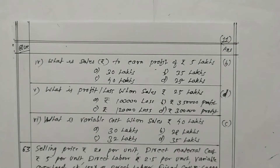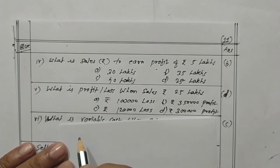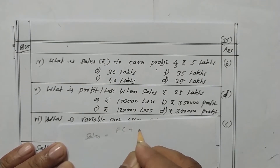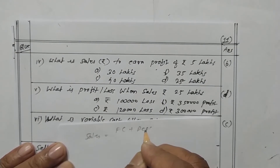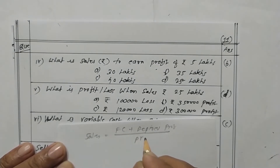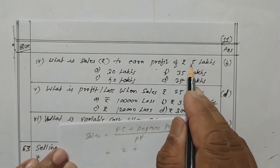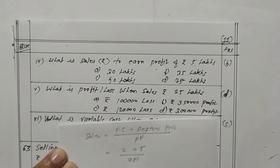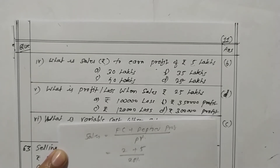What is the sales to achieve a desired profit of 5 lakhs? The formula is: sales equals fixed cost plus desired profit, divided by PV ratio. Fixed cost is 2 lakhs and desired profit is 5 lakhs, so that is 7 lakhs divided by 20 percent PV ratio, which gives 35 lakhs as the answer.